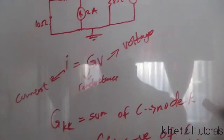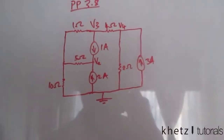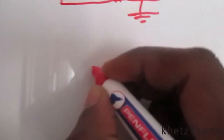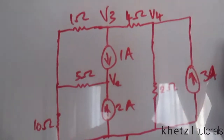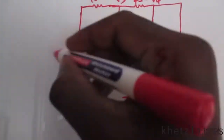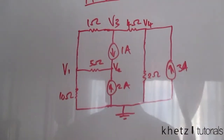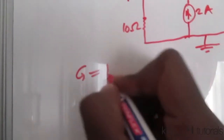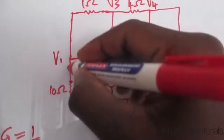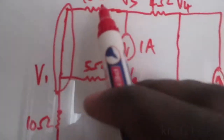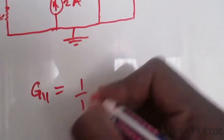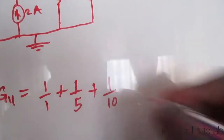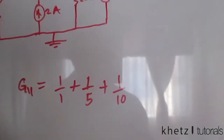Starting with G_11, which corresponds to the conductances connected to node 1. Conductance G is just 1/R. So the sum of all conductances at node 1 is 1/1 + 1/5 + 1/10, which gives 1.3.